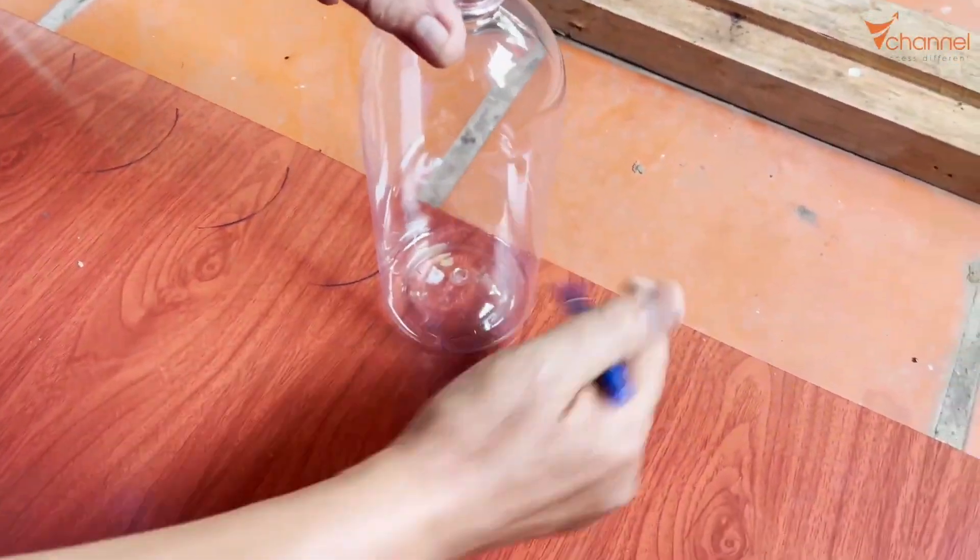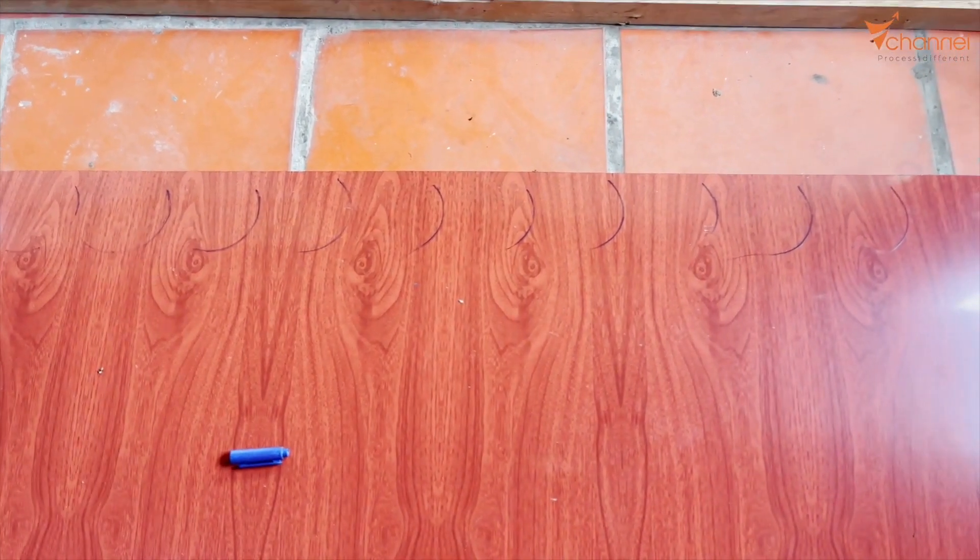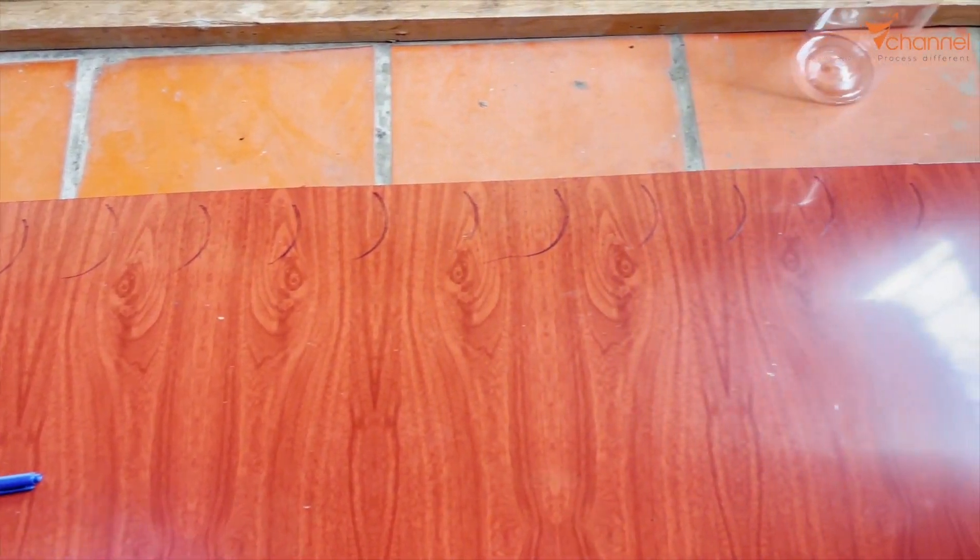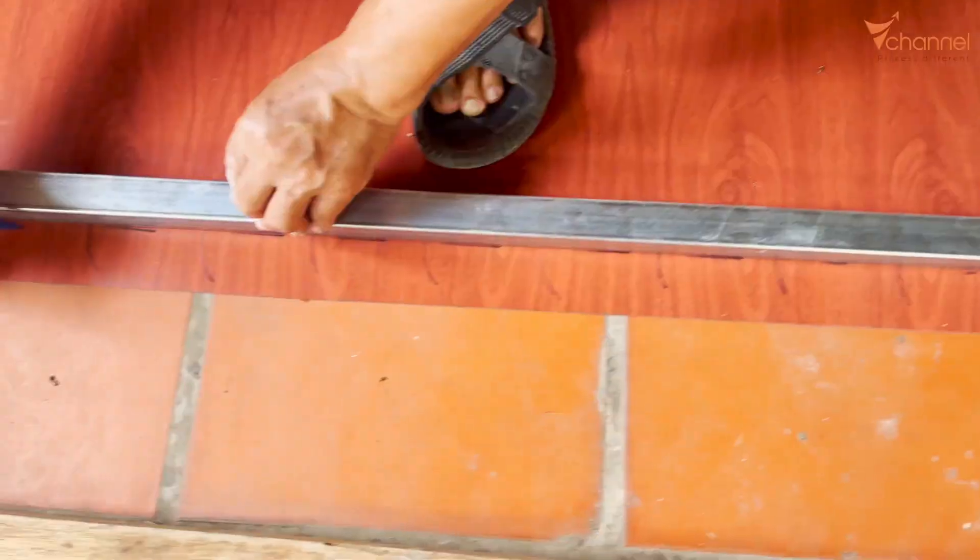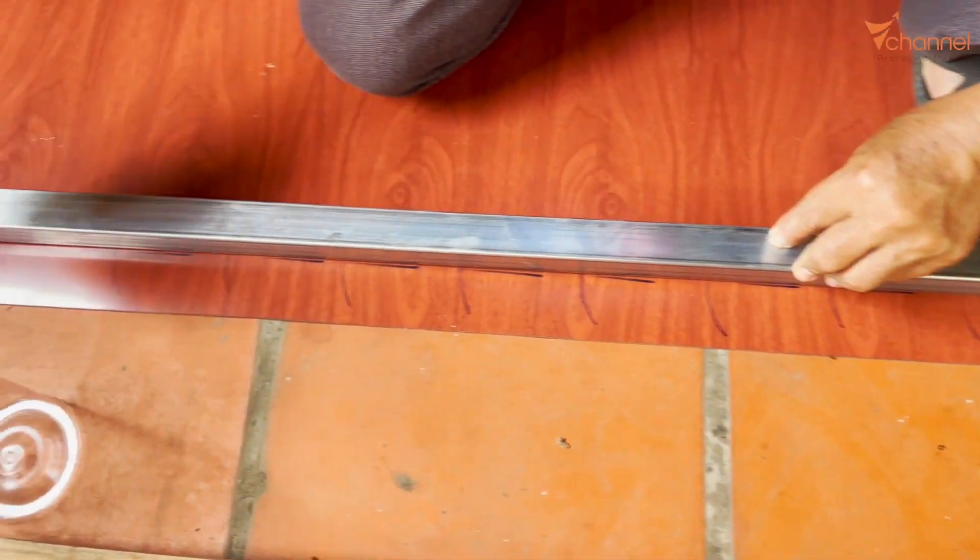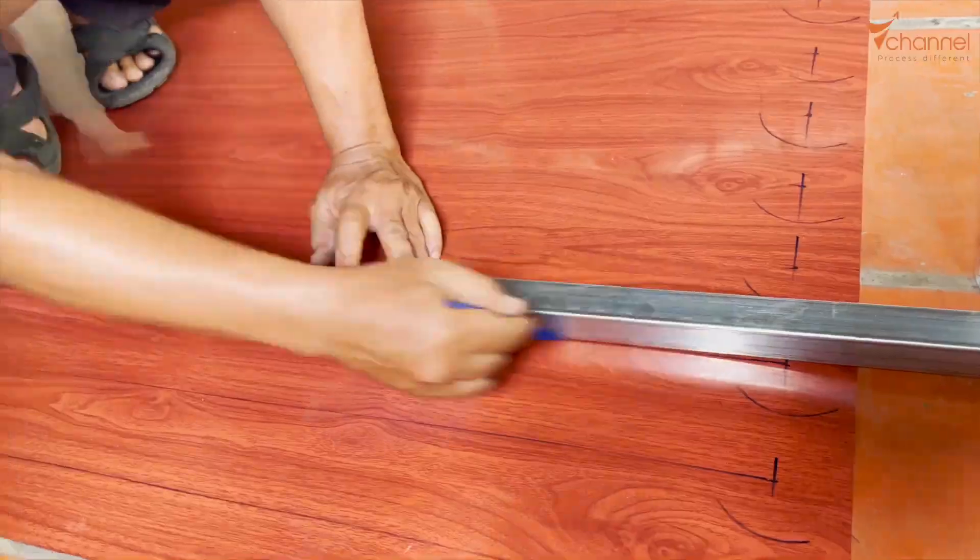These bottles have a bottom diameter of 8.5 centimeters. It's two meters. We'll have 14 bottles to line up, 14 horizontal bottles, 14 vertical bottles, for a total of 196 bottles.